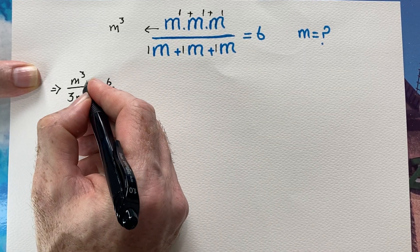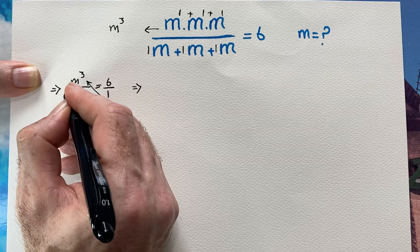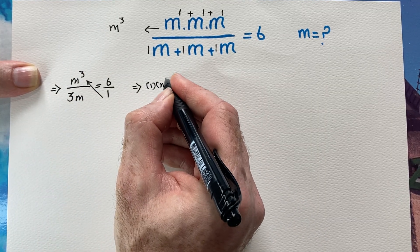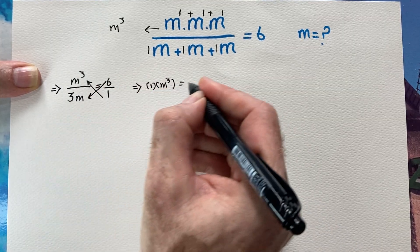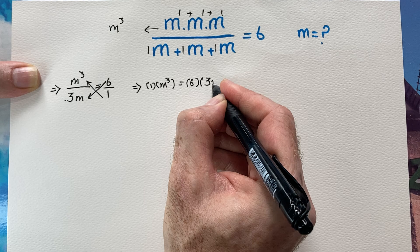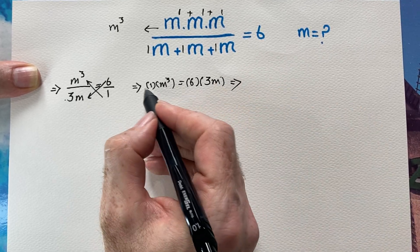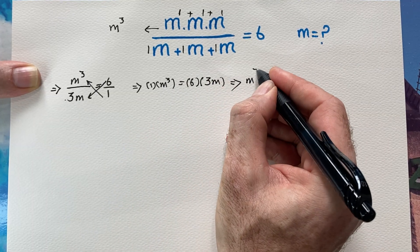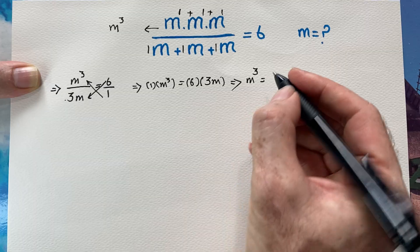I'm going to use cross multiplication and continue the solution. One times m cubed equals six times 3m. So the left-hand side is m cubed, and the right-hand side is six times 3, which is 18m.